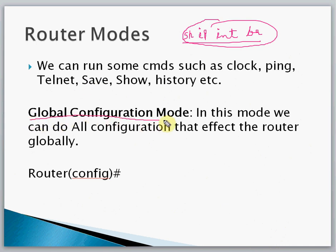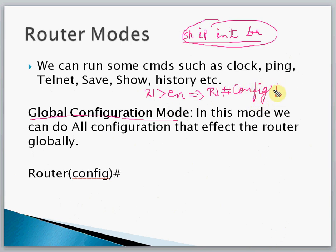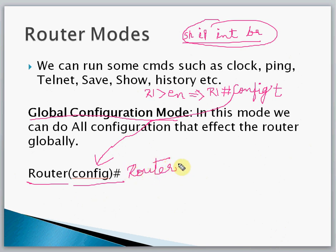The next mode is Global Configuration Mode — this is very important; all configurations are done here. To enter it, we type 'config t' (configuration terminal). The prompt looks like 'Router(config)#'. Here we can configure things like router RIP — for example, 'router rip', 'version 2', 'no auto-summary', and the network commands.